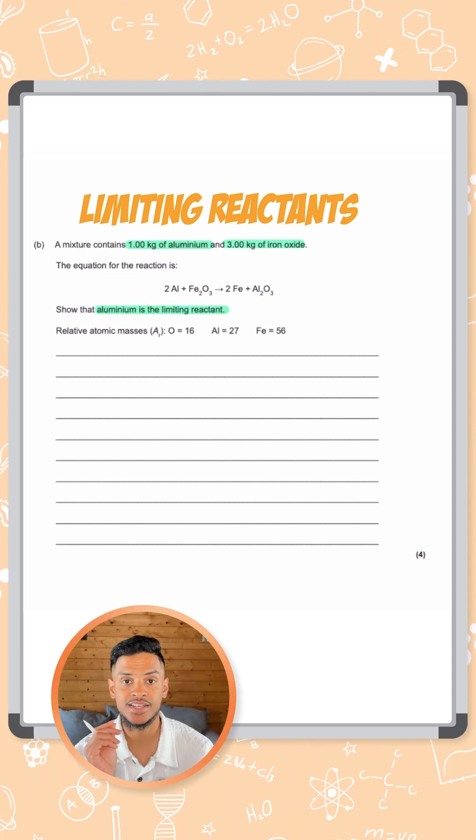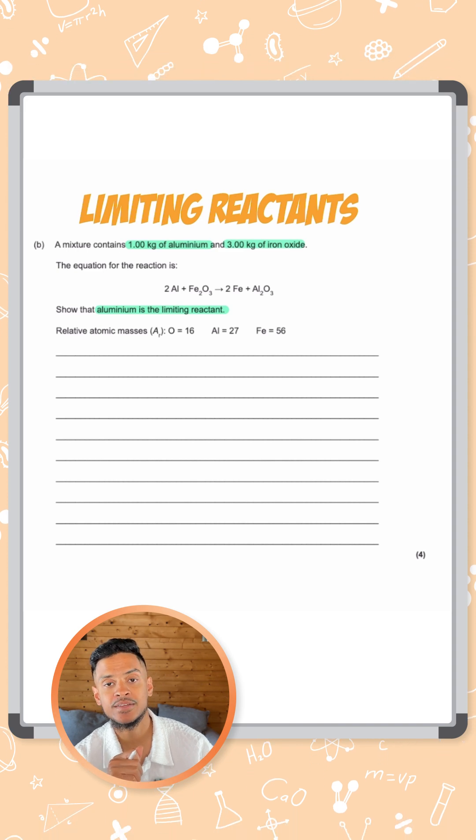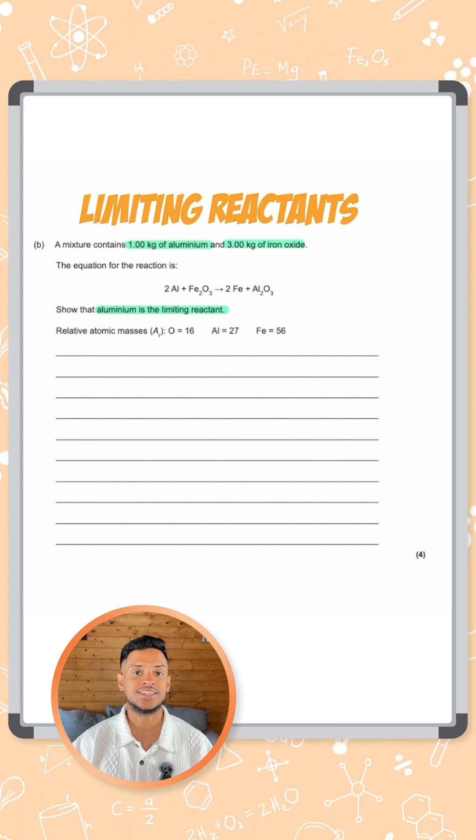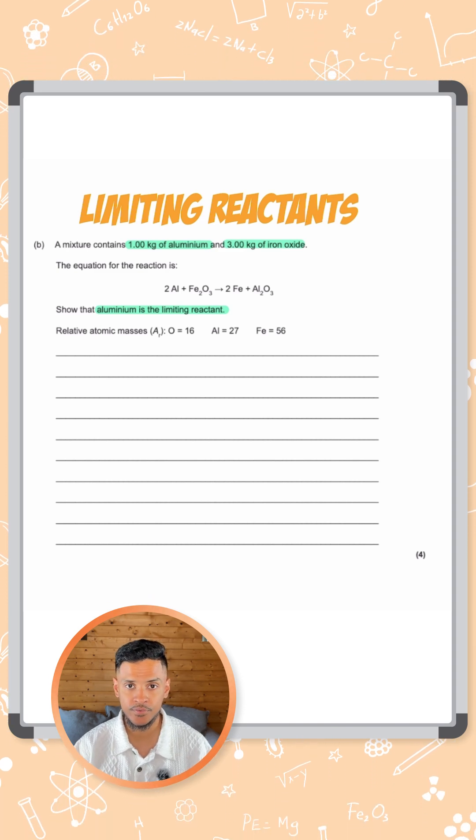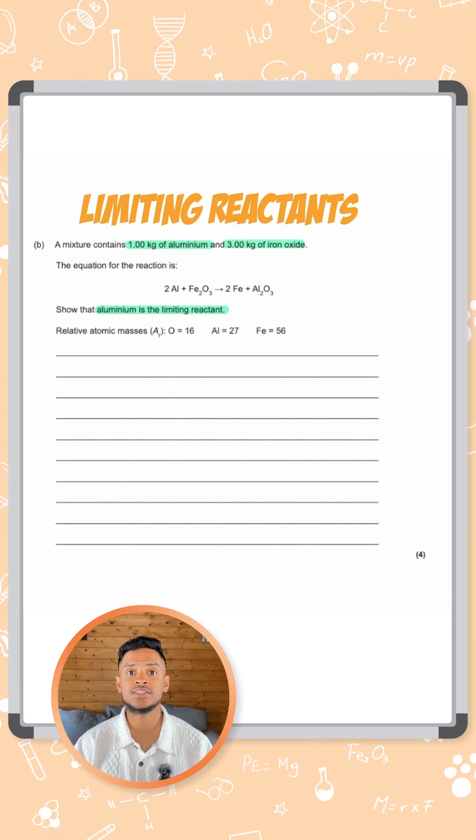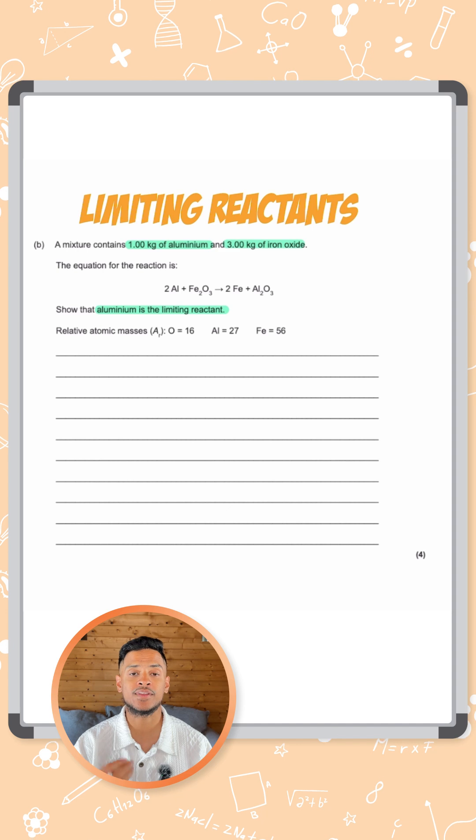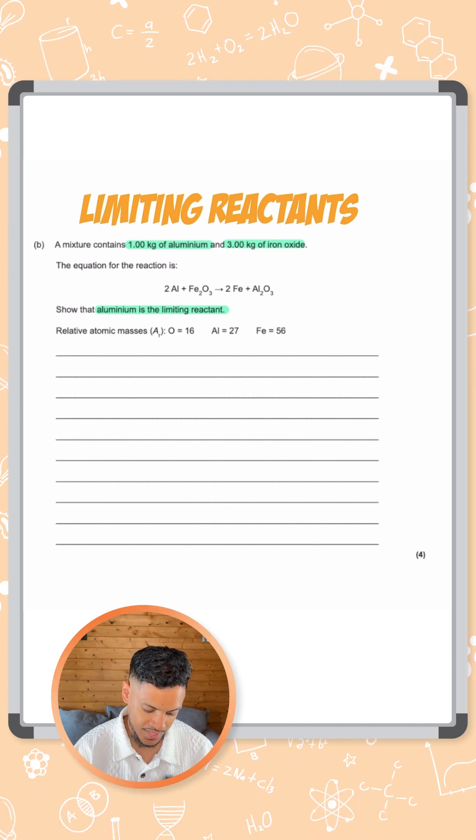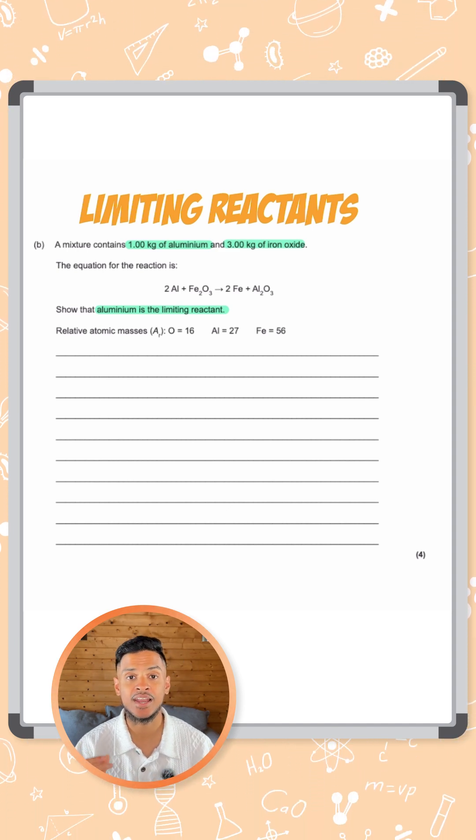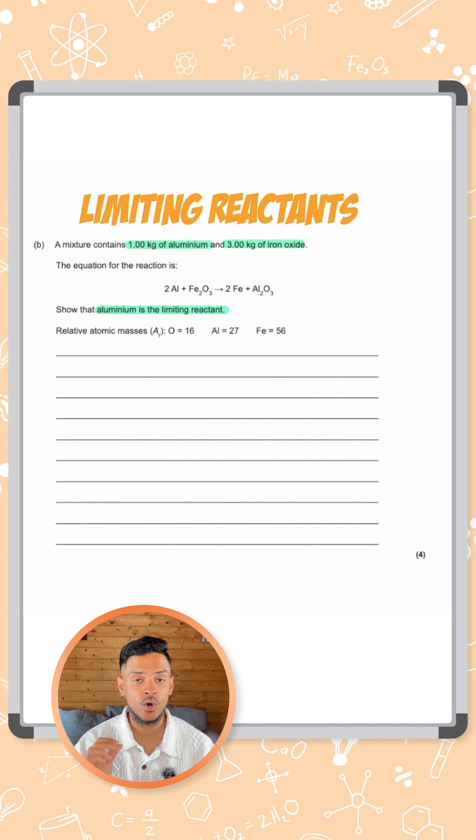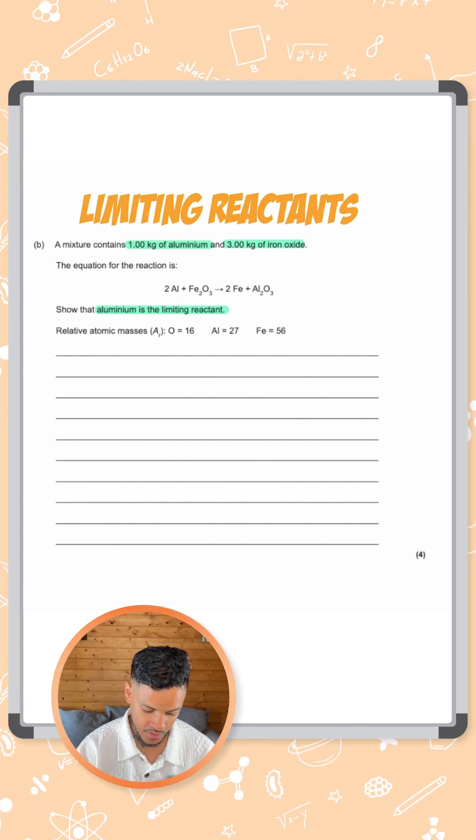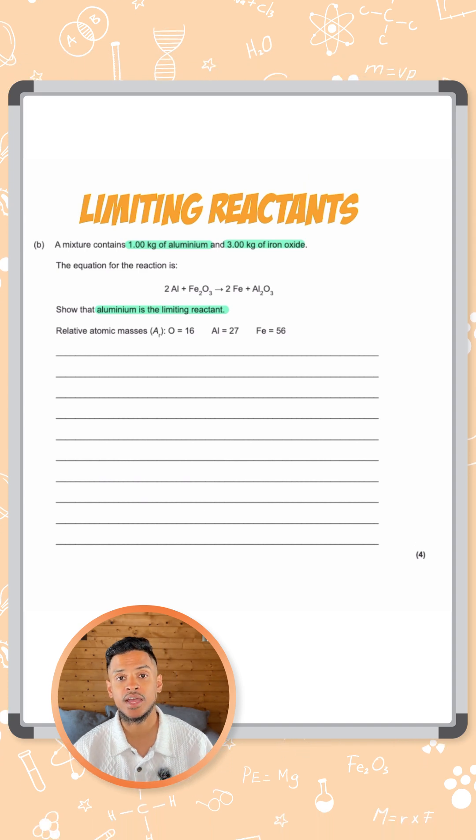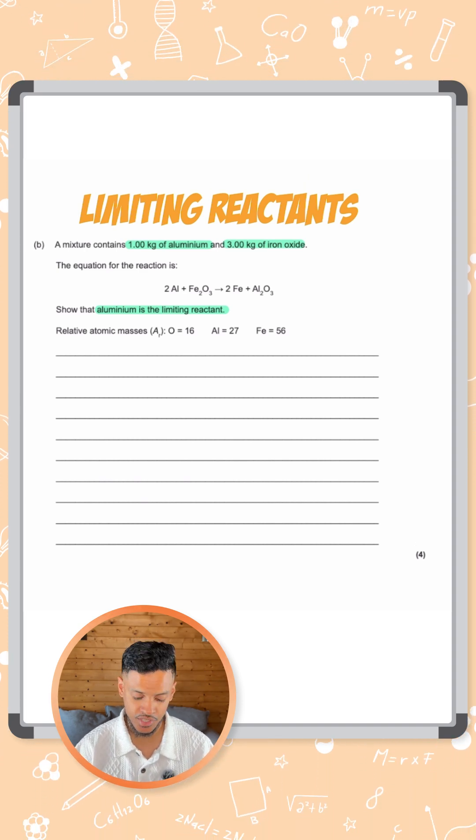First you need to understand the difference between limiting reactant and the reactant in excess. In excess means you have more of that reactant than is needed for that reaction, whereas limited means all of that reactant gets used up. In this question, aluminum is limiting, that means all the aluminum is going to get used up and reacted here because there is more iron oxide than is needed for this reaction.